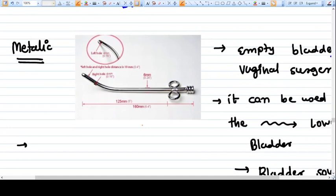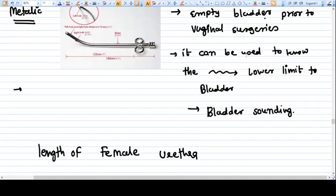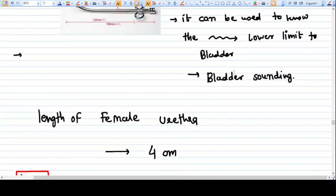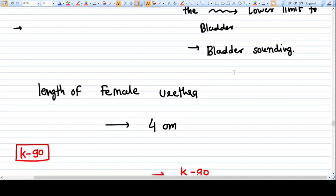This is how the metallic catheter looks. It's mostly used nowadays at the time of vaginal surgeries when you need to drain the catheter frequently. Simultaneously, it's also acting as a bladder sound, meaning it can be used to know the lower limit or boundary of bladder onto the anterior vaginal wall. This helps with various vaginal operations like colporrhaphy, anterior and posterior colporrhaphy. The length of the female urethra is four centimeters - you should know this.